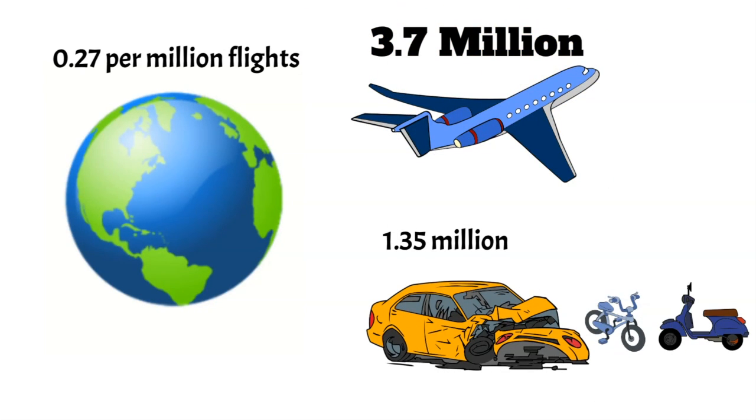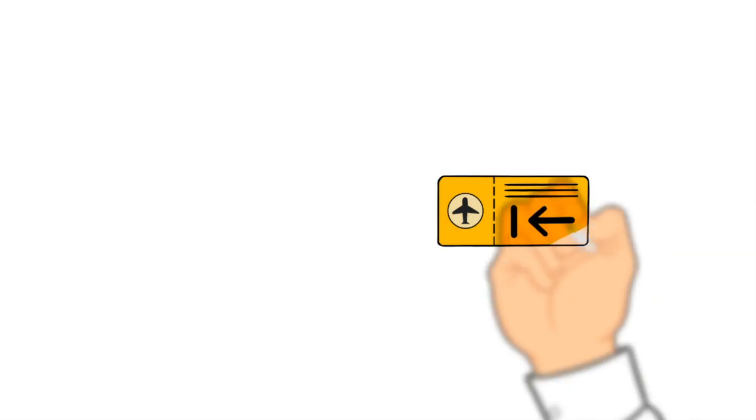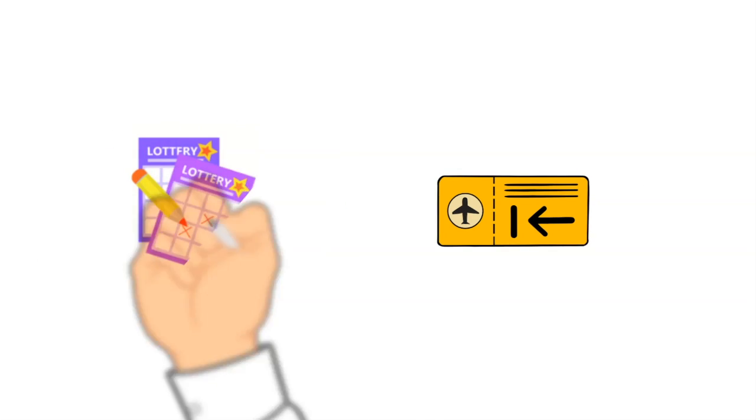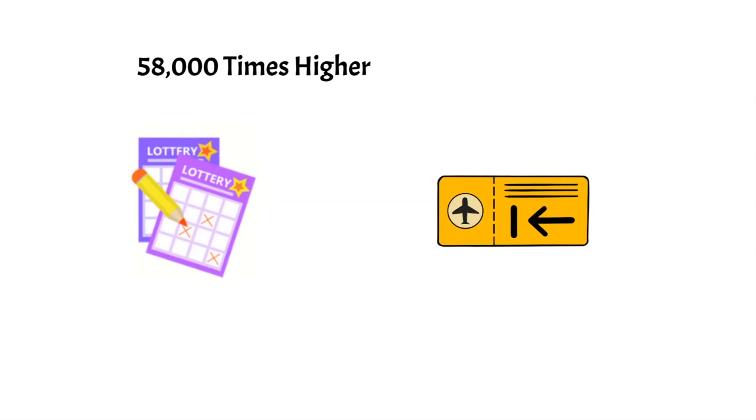If you want to know how rare that number is, imagine this. You buy a ticket for an airplane and a ticket for the lottery at the same time. Your chances of winning the big prize in the lottery is 58,000 times higher than your chance of dying in that airplane.